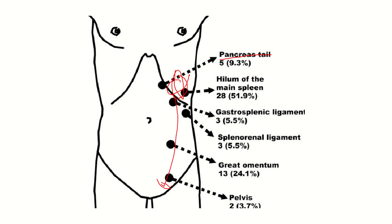The spleen is normally located here and may drop down to different parts of the left side. We can see the hilum of the main spleen. The spleen is formed from different parts — initially it was not a single structure but formed from very small parts. One part may be present at the main splenic hilum. It may also be present in the gastrosplenic ligament and the splenorenal ligament, which connects the spleen with the kidney, while another ligament connects the spleen with the stomach.